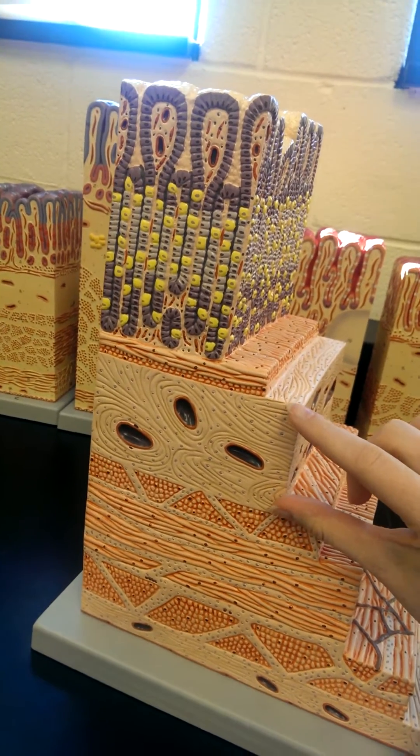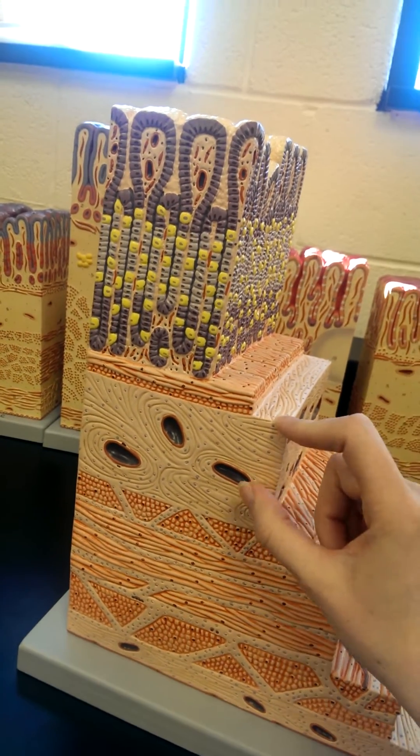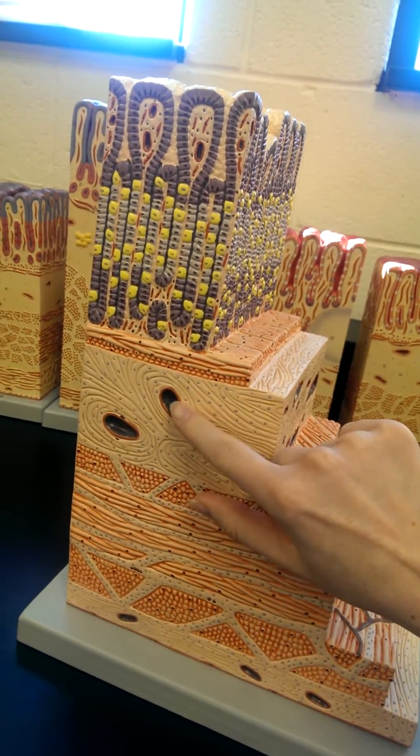This is the submucosa, mostly loose connective tissue, but you'll also see nerves and blood vessels running through it.